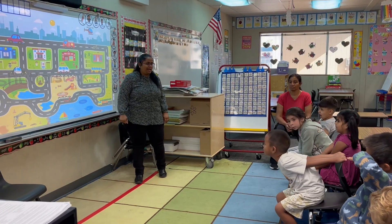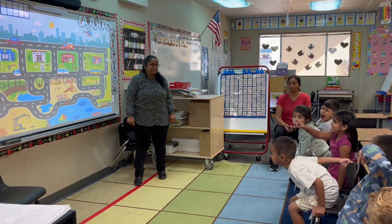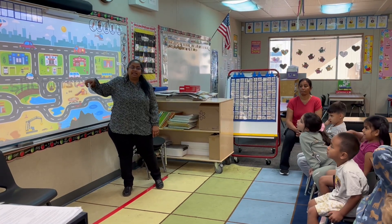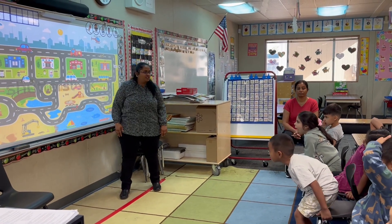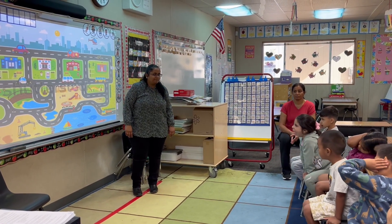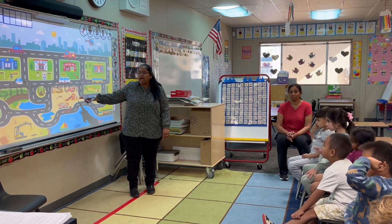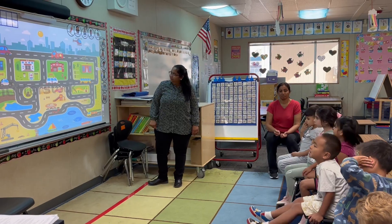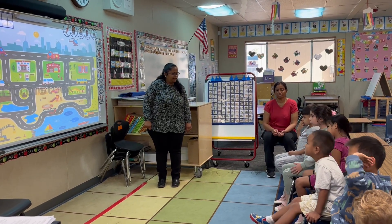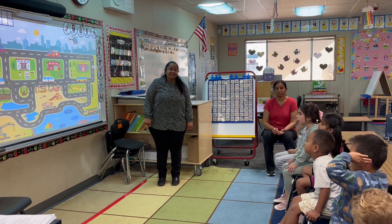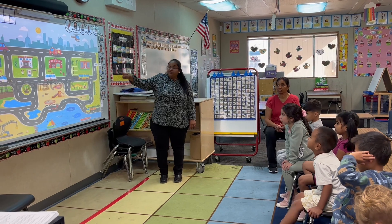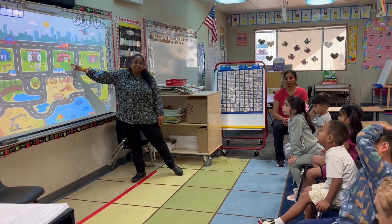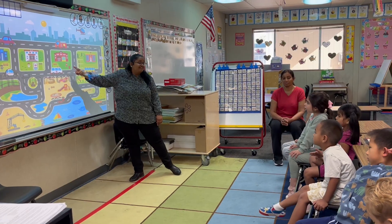Alina, what else do you see on the map? Police car. Uh-huh, police car. Avery already told us. What other things do you see on the map? Playground. Playground. Good job. And Amy, what do you see on the map? Fire. Fire truck. Fire truck. And what is this place called? Fire station. Fire station. Good job.